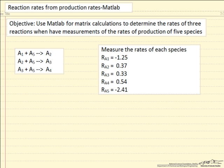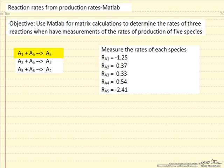So what I mean by that is if we look at three reactions: molecule A1 reacts with molecule A5 to make A2, A2 reacts with A5 to make A3, A3 reacts with A5 to make A4, a sequential hydrogenation reaction for example.